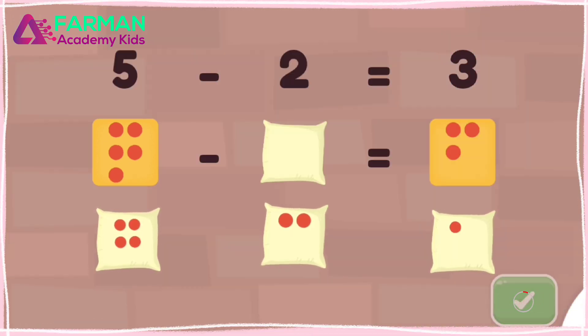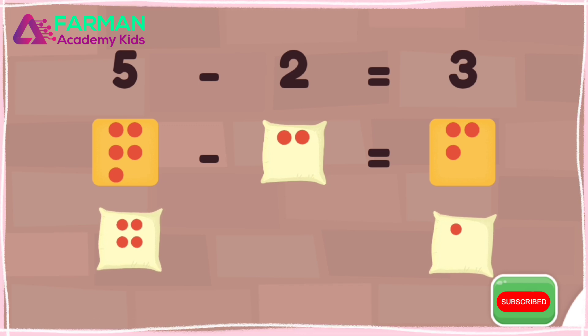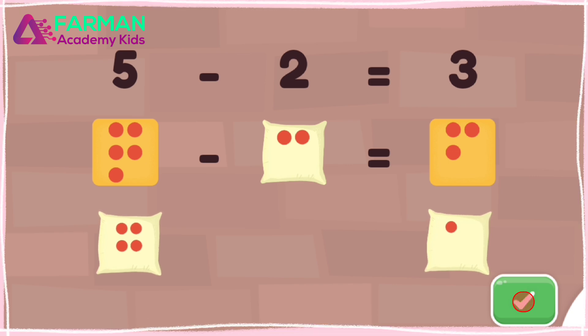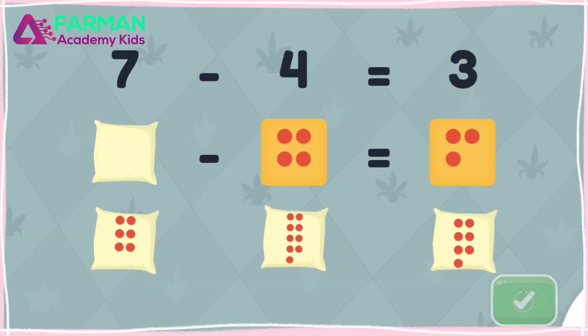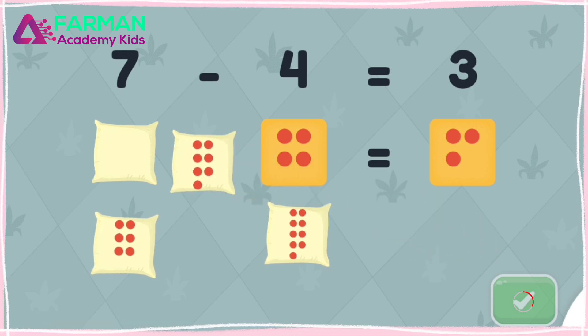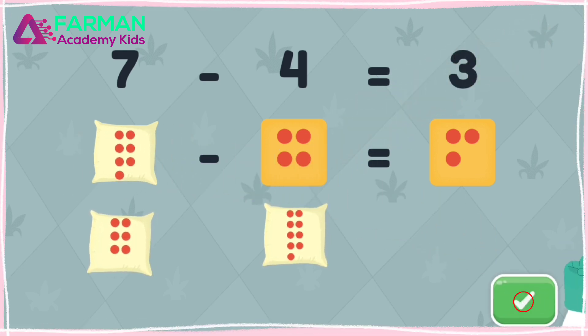5 minus what equals 3? Super! 5 minus 2 equals 3. What minus 4 equals 3? Awesome! 7 minus 4 equals 3.